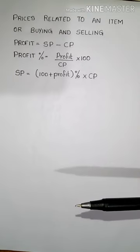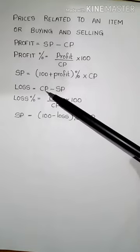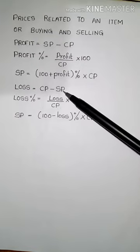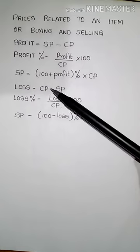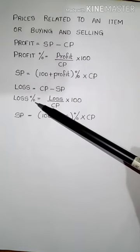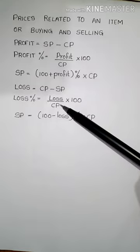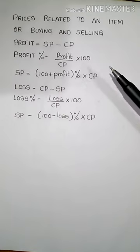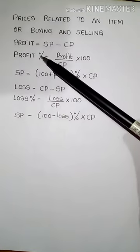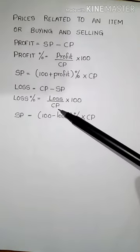Now let us see what about loss. These are the terms related to loss. When will you suffer a loss? When cost price is greater than selling price, we suffer a loss. What is loss percentage? Loss percentage is equal to loss by cost price into 100. Take care: whether you find profit percentage or loss percentage, your denominator is the same — that is, cost price.